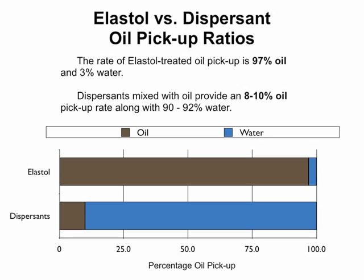Elastal allows oil to be picked up to the exclusion of water. It is not unusual for the pickup ratio to be 97% Elastal oil with 3% water. This compares to dispersant-treated oil where the pickup ratio is 8 to 10% oil and 90 to 92% water. Recovered water is toxic, hazardous, and expensive to dispose of.